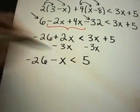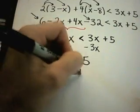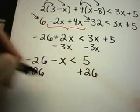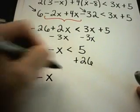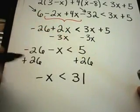Now I'm trying to get x by itself, so I'll add 26 to both sides. I'm left with -x on the left side. 5 + 26 is 31.